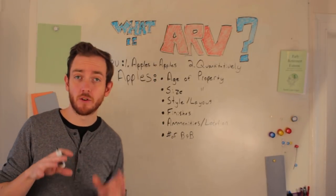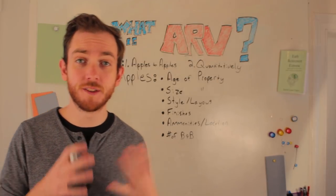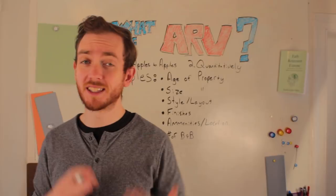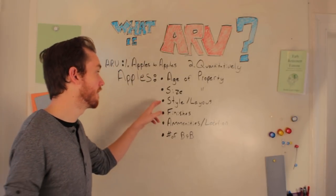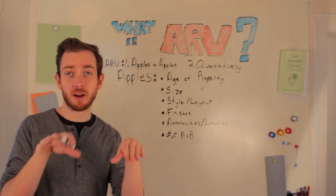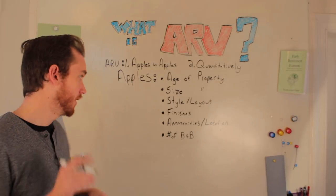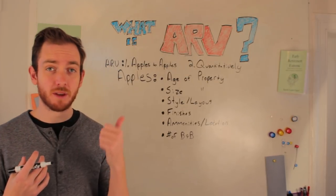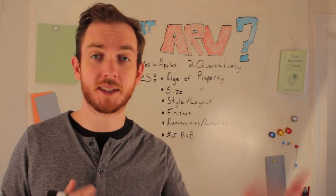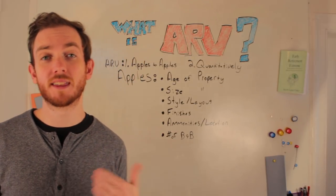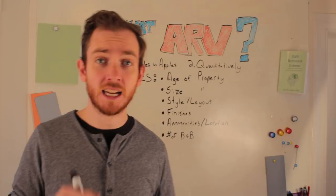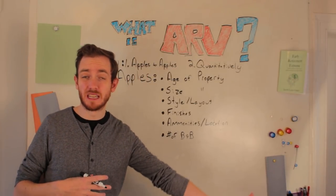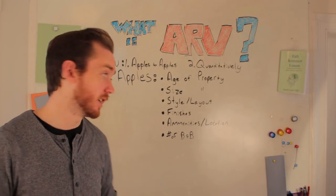The same goes for finishes. Even in the neighborhood by Fanshawe College, where all the houses were built within the last 20 to 30 years and are the same style, one thing to keep in mind is the finishes. If my property is going to be fixed and updated to its utmost potential — say I'm spending $10,000 or $20,000 on renovations — but the comparable property hasn't been updated for 20 years, that's something I need to take into consideration.